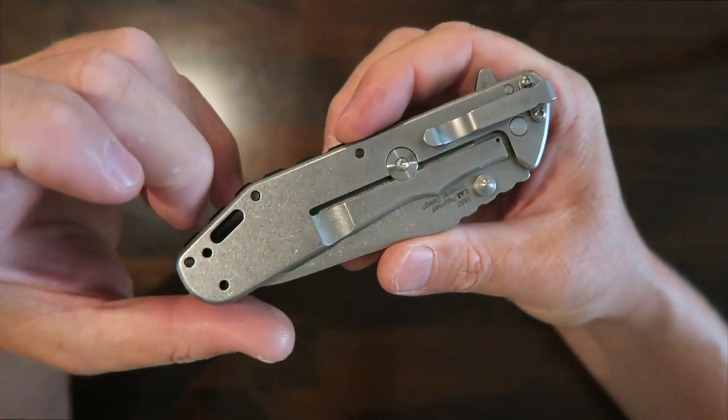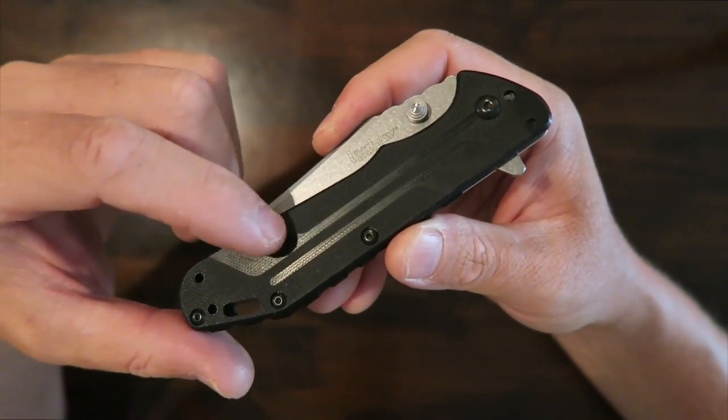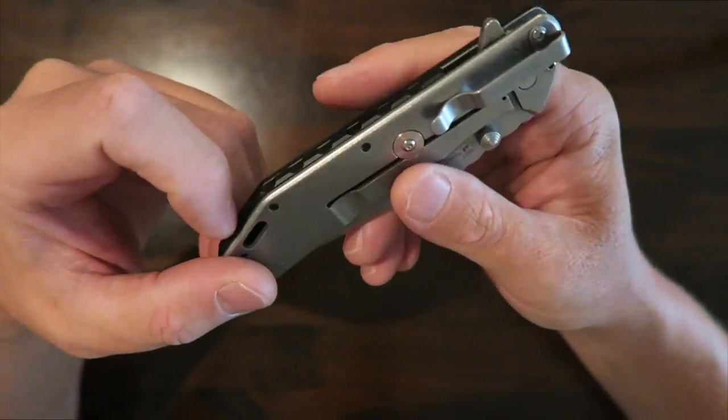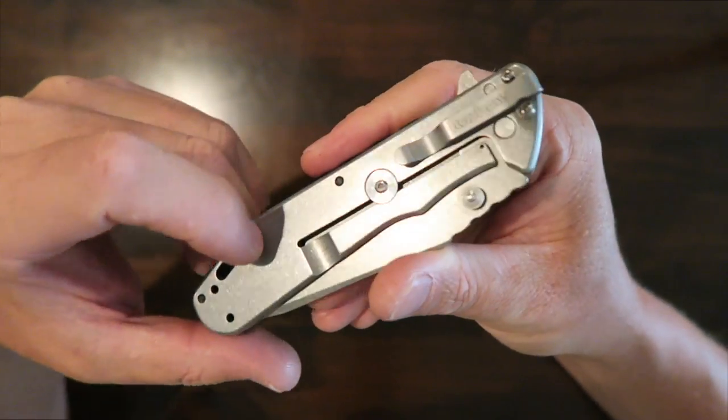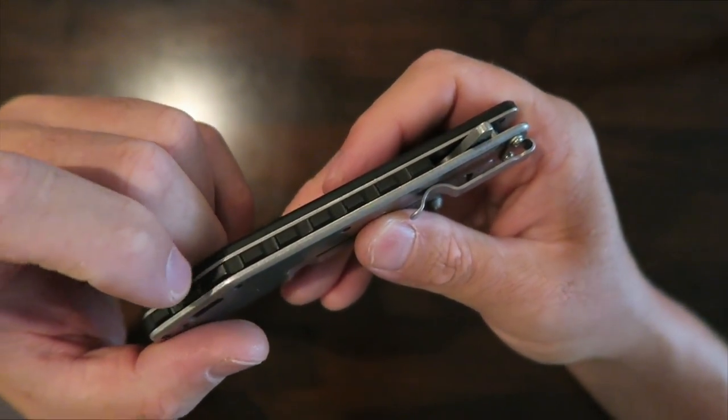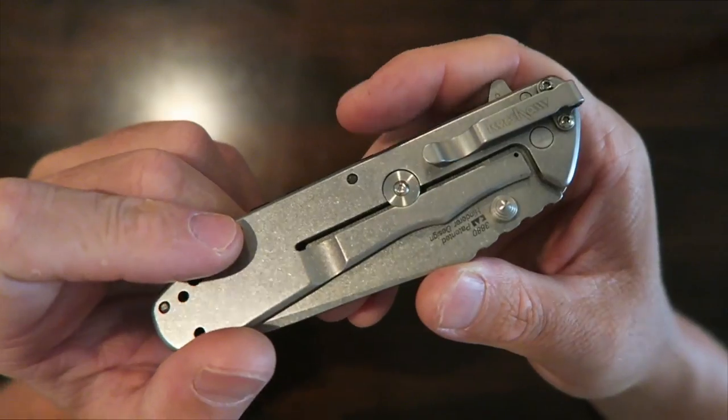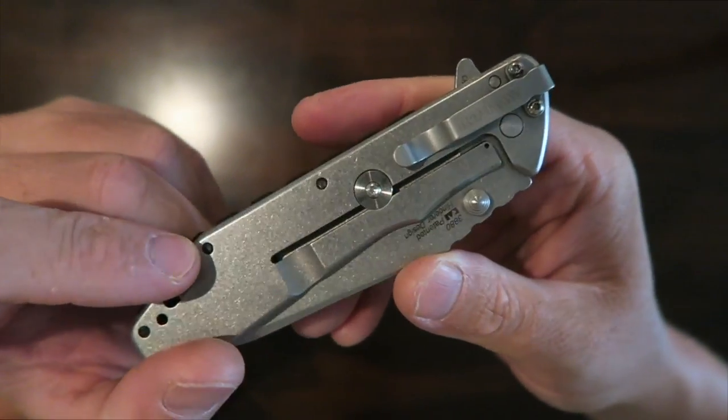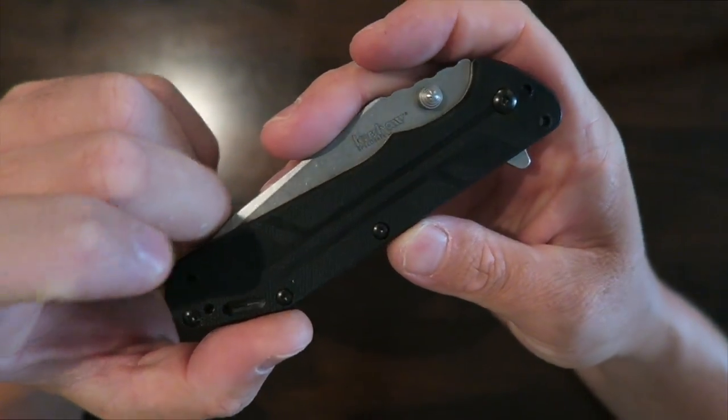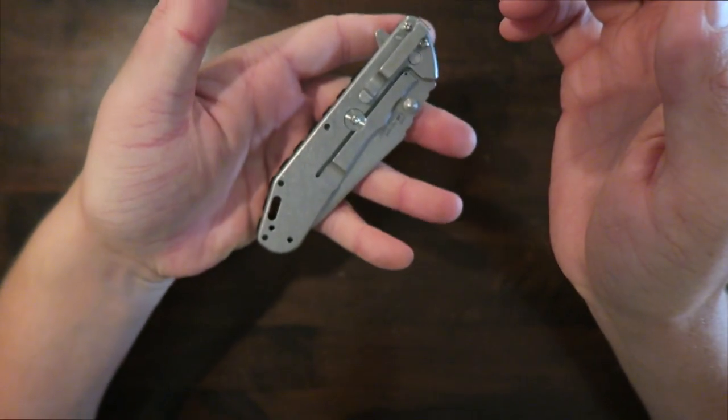It is, I believe, yeah, left and right tip up and tip down configurations for the pocket clip. A great knife, a little bit heavier than some of the other ones. This one comes in at 4.9 ounces. It is a fairly large knife.